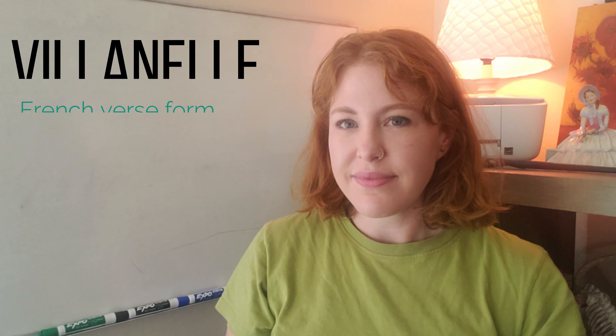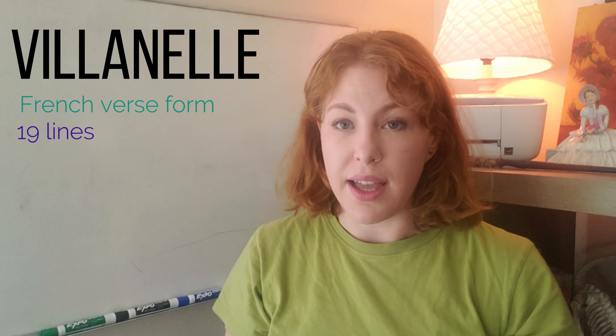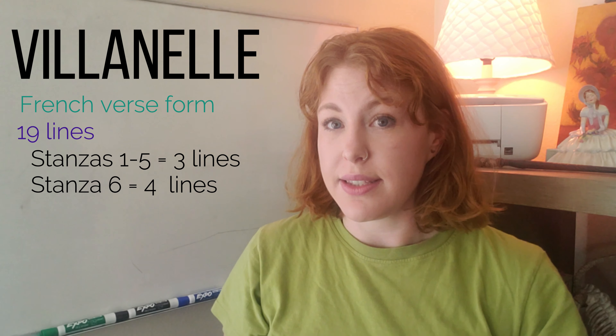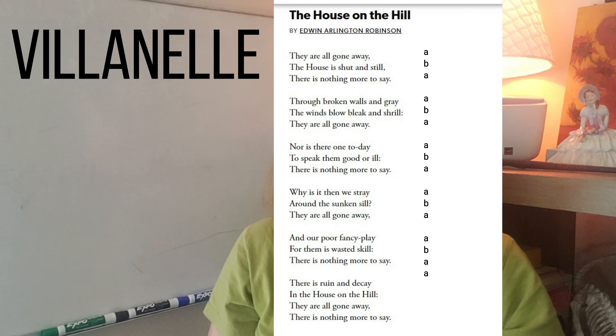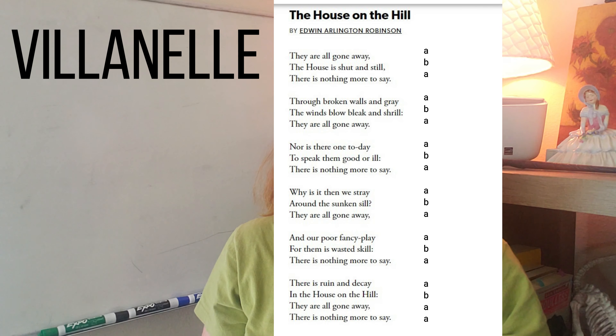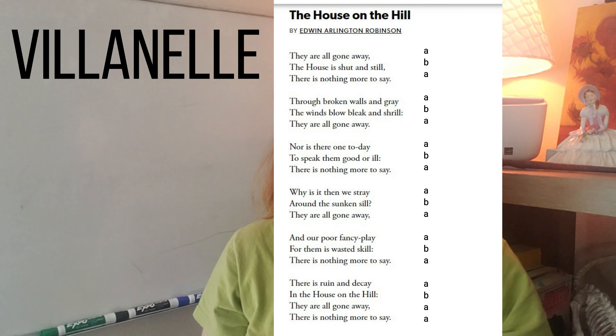The next type of form is known as a villanelle. Villanelles consist of 19 lines — five three-line stanzas and one four-line stanza. The rhyme scheme usually follows ABAABA, with the last stanza being ABAA.